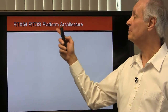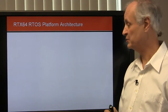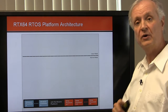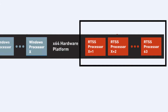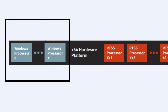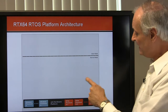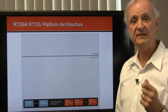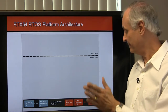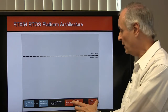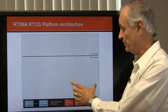Now let's take a look at this RTOS platform architecture in detail. First, notice the 64-bit hardware platform. You will notice that some processors are assigned to RTX for real-time, while others are assigned to Windows for non-real-time activities. Processor affinity is the ability to allocate and then statically assign a processor to a particular process or to a thread.